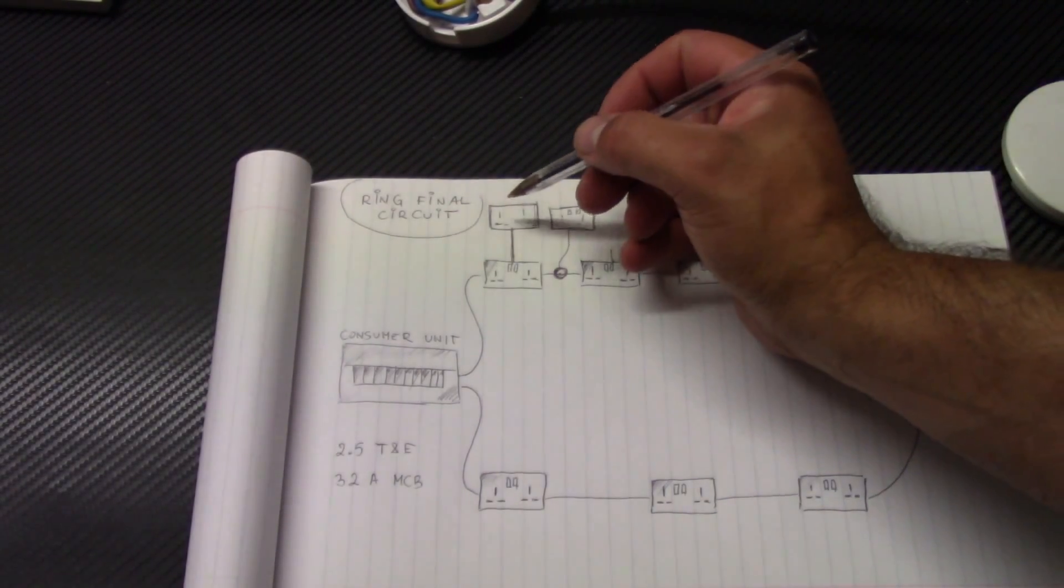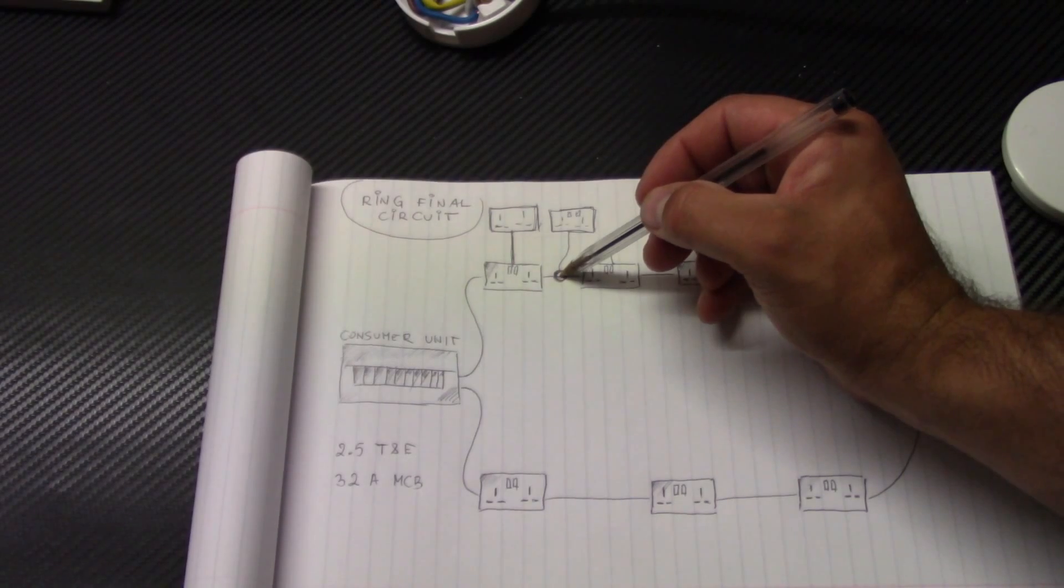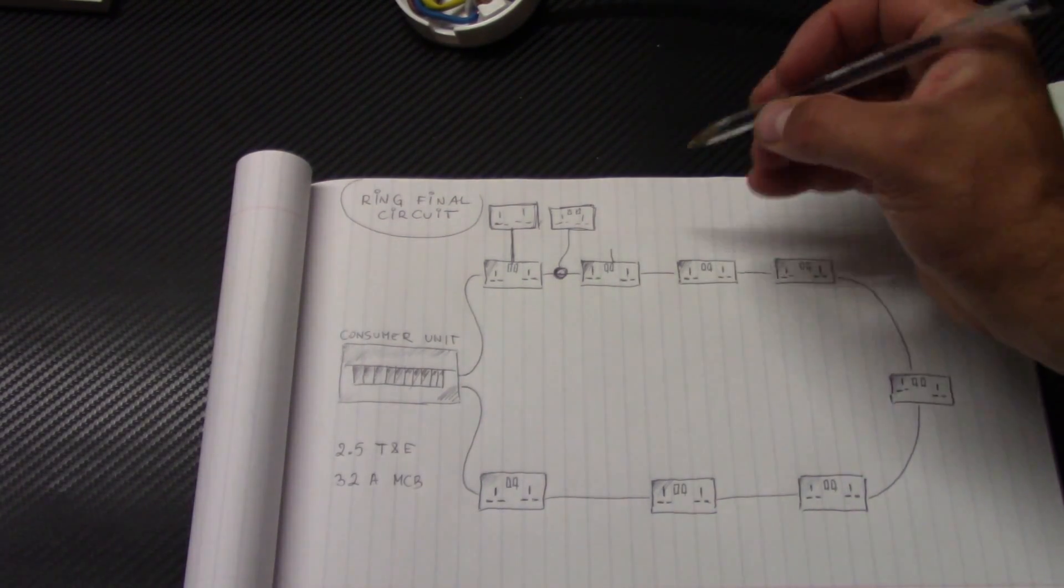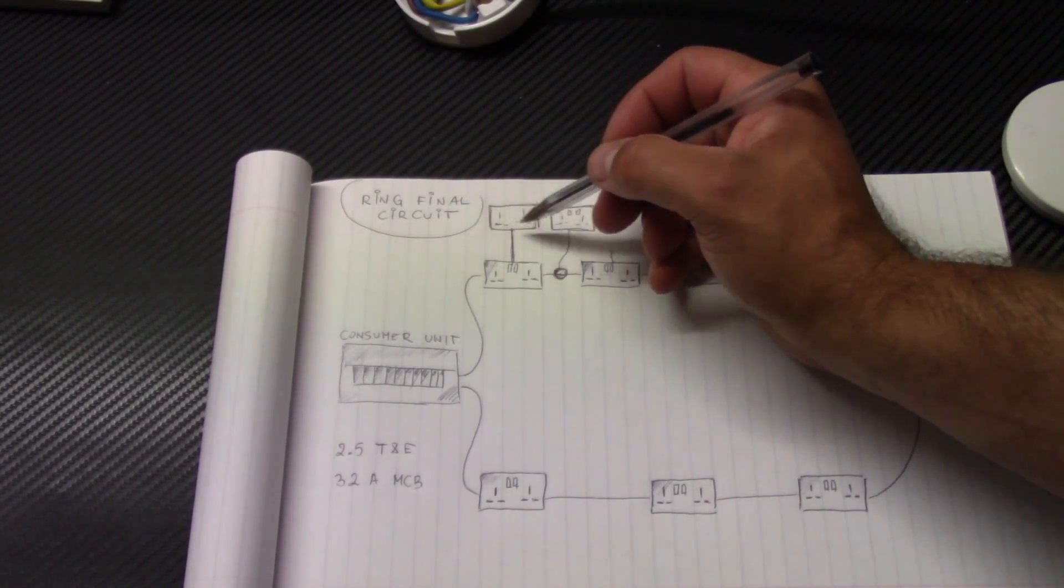I showed you how to make a spare from the socket and how to make a spare from the junction box fitted on the ring cable. Both of these options are called unfused spare. They are unfused spare.